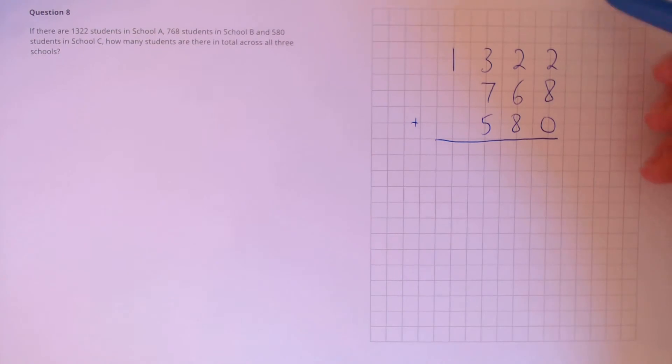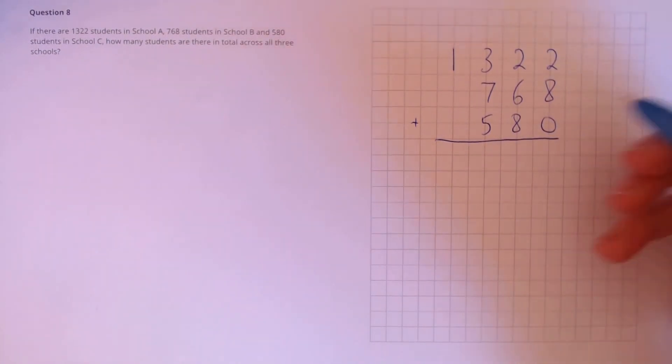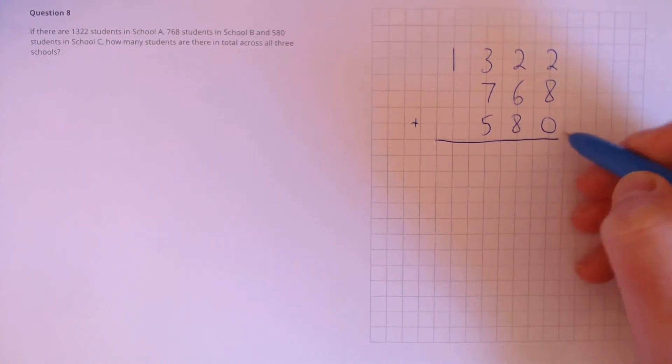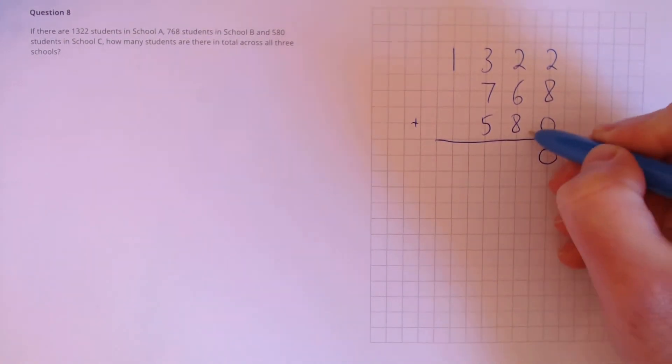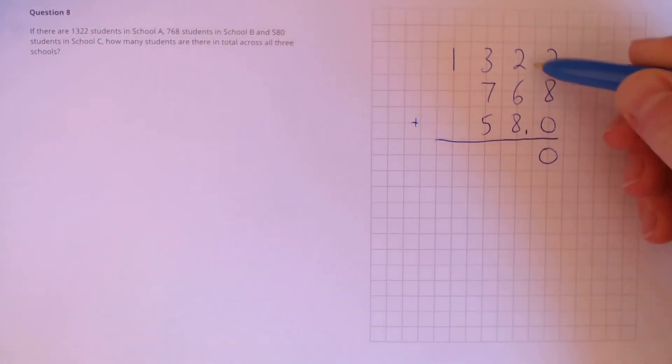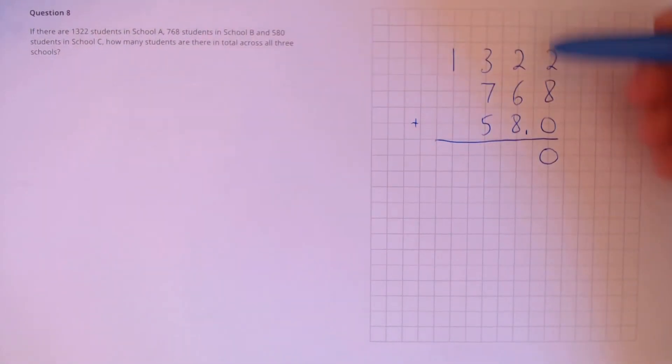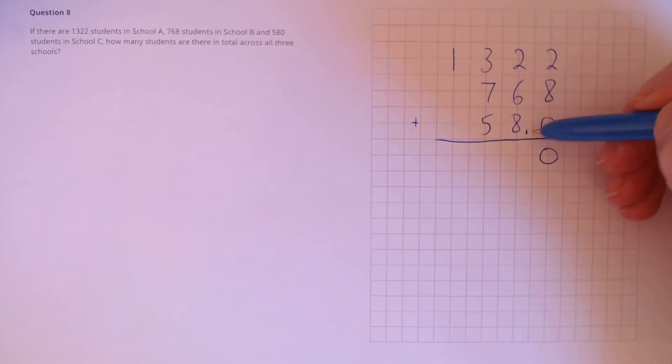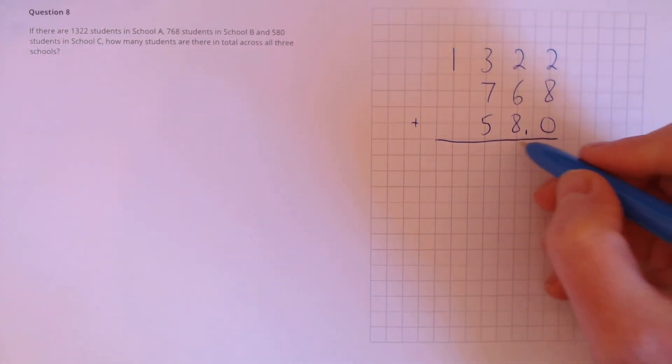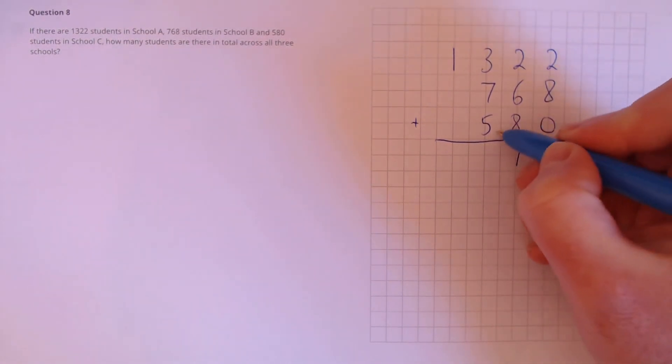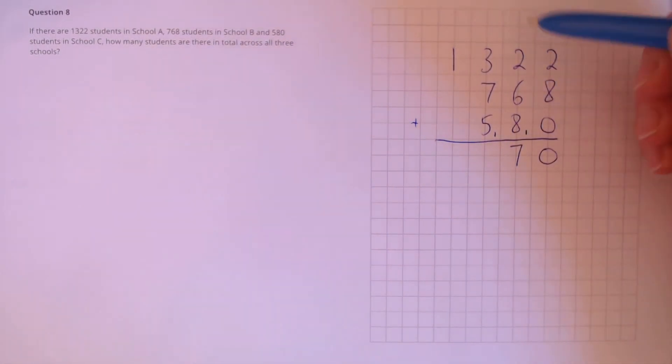If we're going to add all these three together, we need to start with the units column. So, 2 plus 8 plus 0, that's 10, which is too much to put in the units. So, we need to put a 0 there, and carry over 1,10 into the tens column. Now, 2 plus 8, that's 10, plus 6 plus 1 is 17. So, 7 here, and we carry over a 1 into the hundreds column.